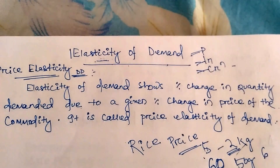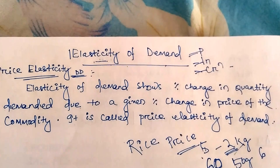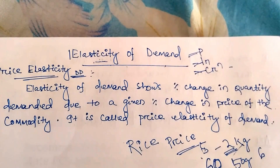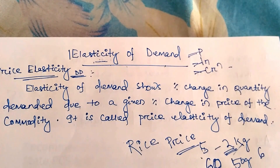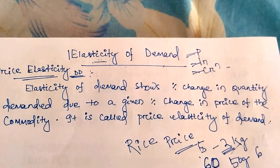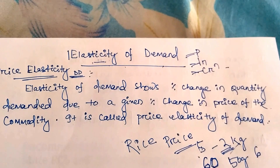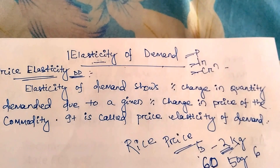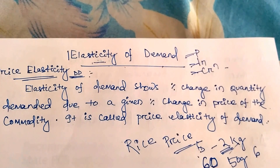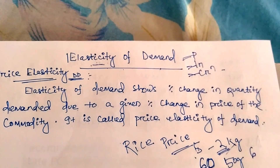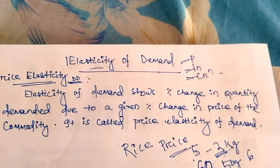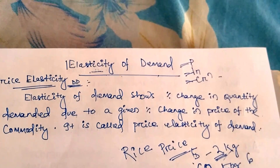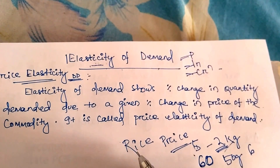Price elasticity of demand is defined as the percentage change in quantity demanded due to a given percentage change in the price of a commodity. It is called the price elasticity of demand.